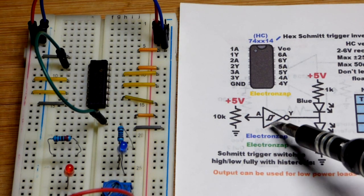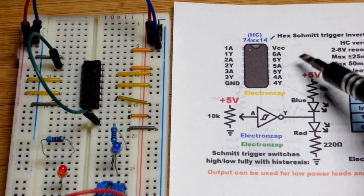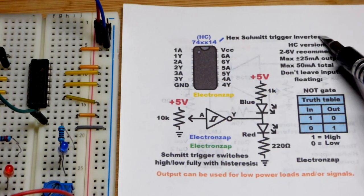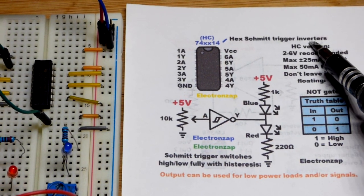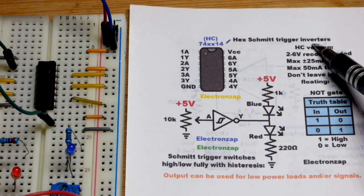So now we're going to look at the NOT gate. We've got an integrated circuit right here called a hex Schmitt trigger inverter. Inverter, when it comes to digital electronics, is the same as a NOT gate.